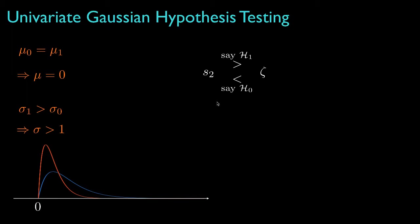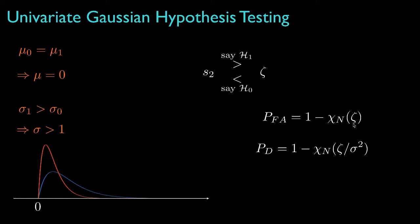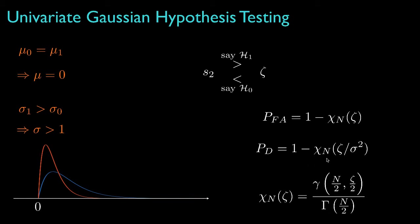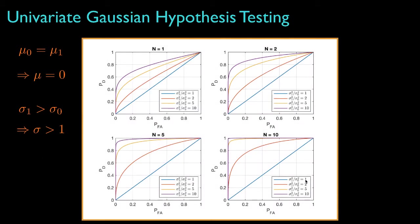To analyze the receiver operating characteristic, we'd use the fact that the density for S2 under hypothesis 0 is a chi-square with N degrees of freedom, so that the false alarm probability is 1 minus the cumulative distribution for a chi-square evaluated at the threshold. Because the distribution under H1 corresponds to a scaled chi-square, we can get a similar form for the detection probability, where this probability depends on the parameter sigma, which is the ratio of sigma_1 to sigma_0. In terms of more familiar functions, the cumulative distribution function for the chi-square distribution with N degrees of freedom is the ratio of an incomplete gamma function to a gamma function, and using these expressions, we could evaluate the receiver operating characteristic for various situations.